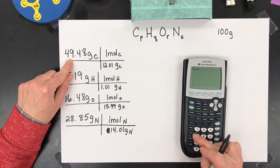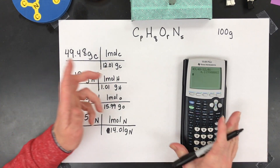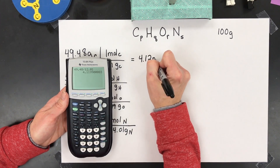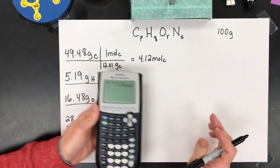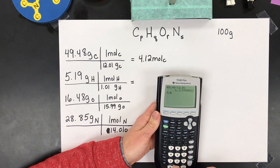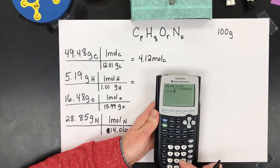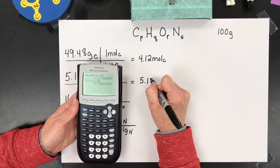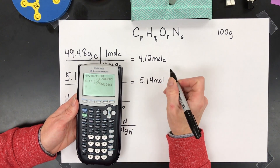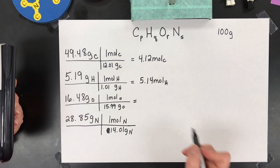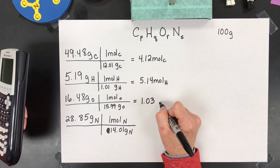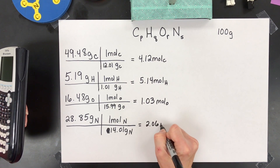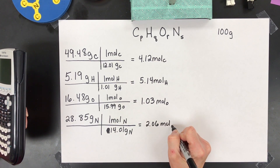So we take 49.48 and divide it by 12.01 to get the moles of carbon. Then 5.19 divided by 1.01 gives us about 5.14 moles of hydrogen. The last two: 1.03 moles of oxygen, and the nitrogen gives us 2.06 moles of nitrogen.